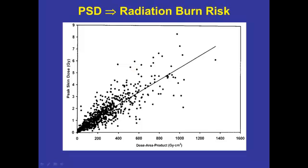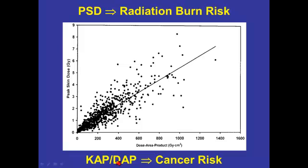The peak skin dose is the number you want for radiation burn risk, and the Kerma area product — also known as the dose area product — is something I can use to give you a reasonable estimate of any possible cancer risk.